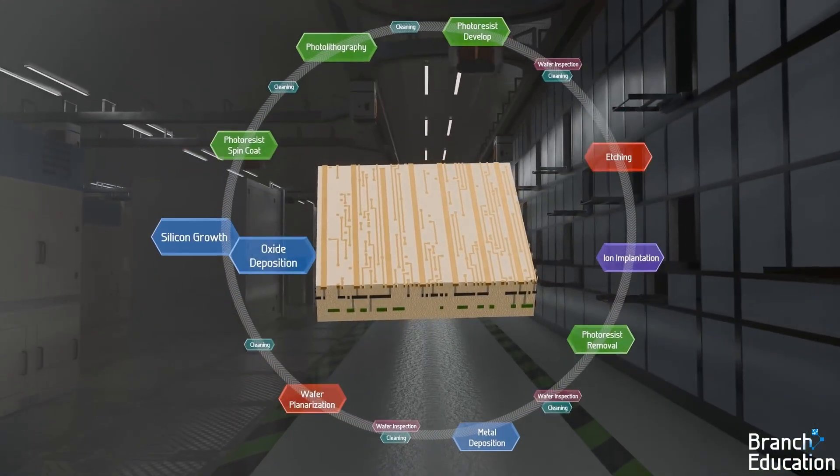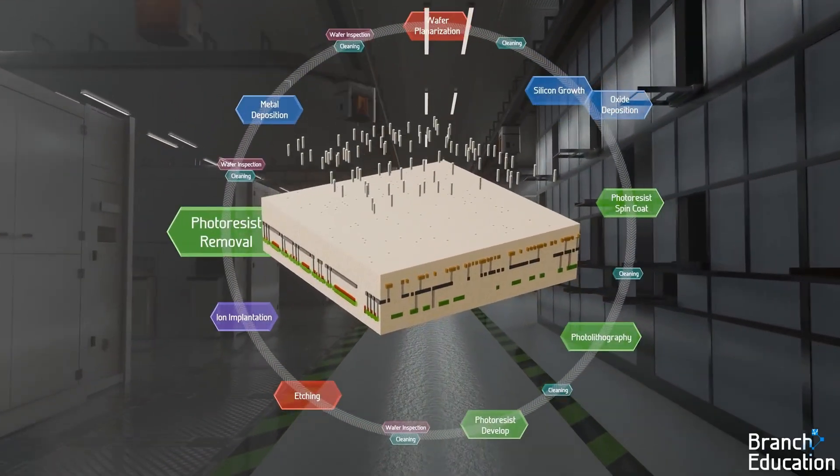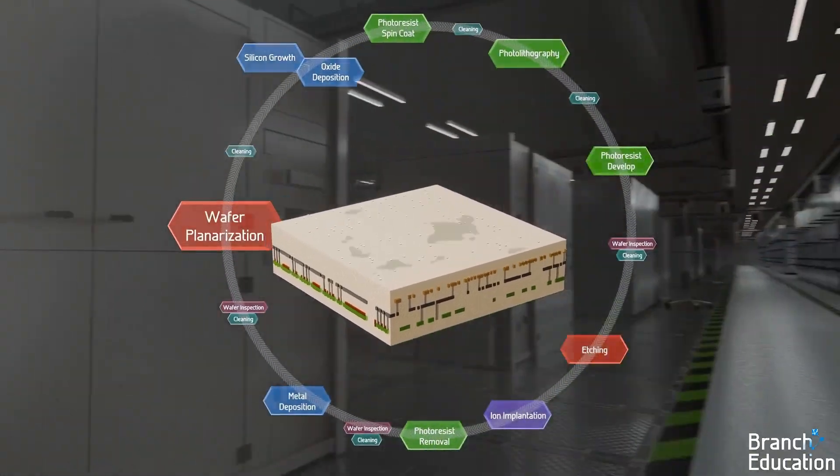A single metal layer is now completed, and the wafer is ready for the next cycle to begin, where insulating silicon dioxide and the vias will be added.